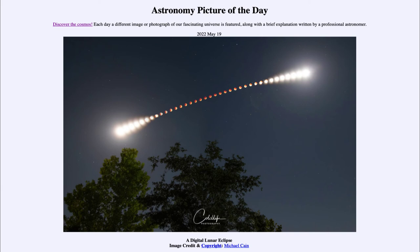Eclipses occur in what we call eclipse seasons. We get eclipses around this time of year, and about six months from now we will have eclipses again. This is because of the way the moon's orbit is tilted relative to the Earth and sun. Most of the time the moon passes well above or below Earth's shadow and not through it. Only at certain times of year will the moon pass through the shadow and give us eclipses such as the one we see today.